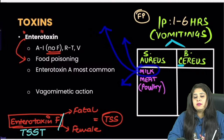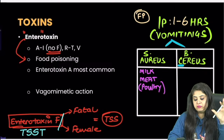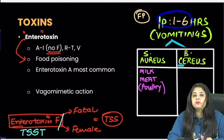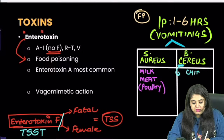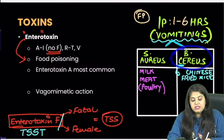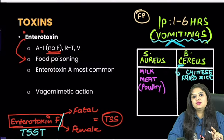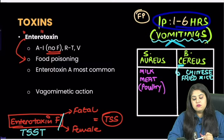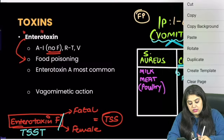Bacillus cereus — C for Chinese fried rice. It causes two types of food poisoning: emetic (vomiting) type and diarrheal type. Only the emetic type has the 1 to 6 hour incubation period. The diarrheal type has a longer incubation period. So the 1–6 hour overlap between Staph aureus and Bacillus cereus is specifically the vomiting/emetic type.